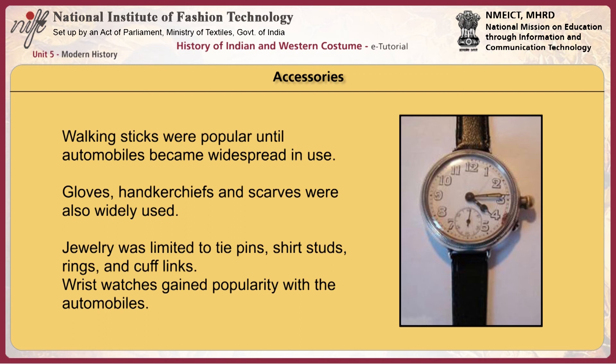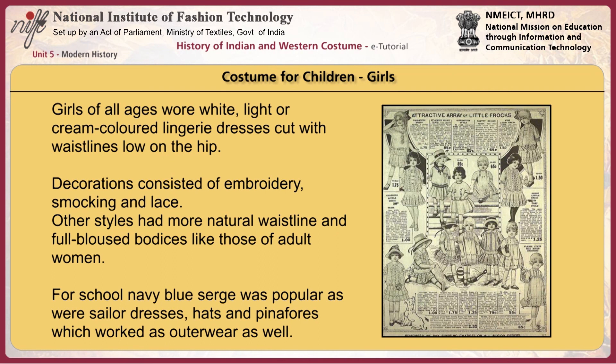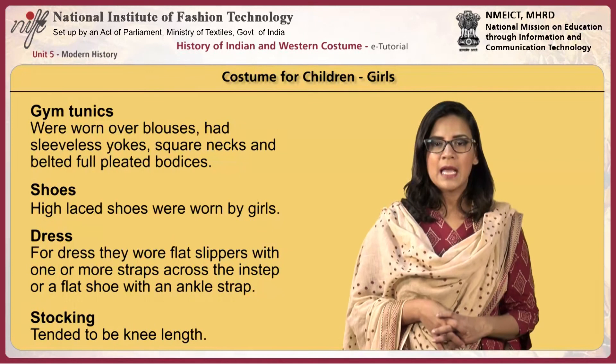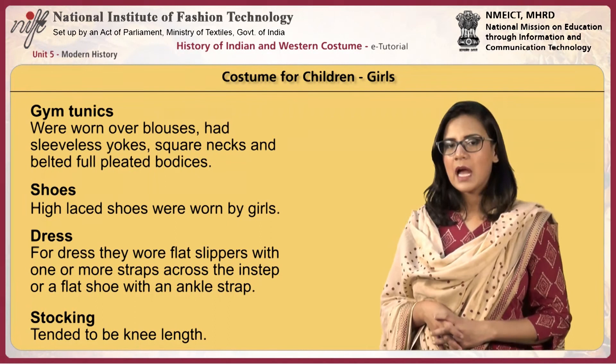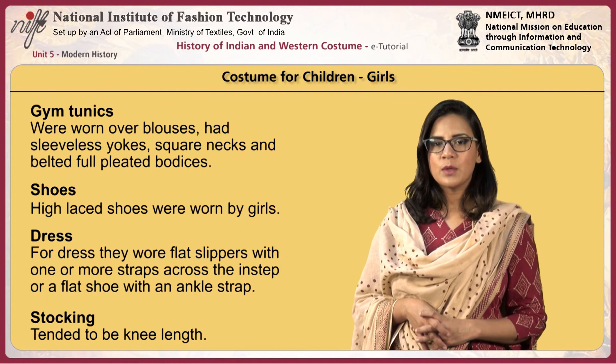Girls of all ages wore white, light, or cream-coloured lingerie dresses cut with waistlines low on the hip. Decorations consisted of embroidery, smocking, and lace. Other styles had more natural waistlines and full-bloused bodices like those of adult women. For school, navy blue serge was popular, as were sailor dresses, hats, and pinafores. Skirts were knee-length and longer. Gym tunics were worn over blouses, had sleeveless yokes, square necks, and belted full-pleated bodices. High-laced shoes were worn by girls; for dresses they wore flat slippers with one or more straps across the instep, or a flat shoe with an ankle strap. Stockings tended to be knee-high.